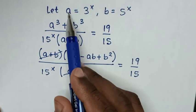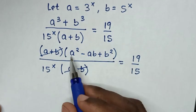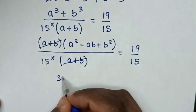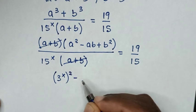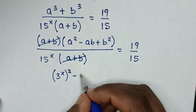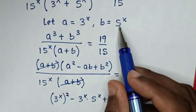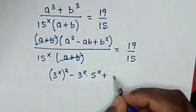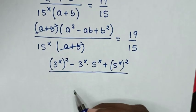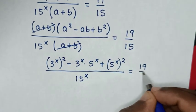We substitute the value of a which is 3^x and b which is 5^x into this equation. So a² becomes (3^x)², minus a times b gives 3^x times 5^x, plus b² becomes (5^x)². This gives (3^x)² − (3^x)(5^x) + (5^x)², all over 15^x, equals 19 over 15.